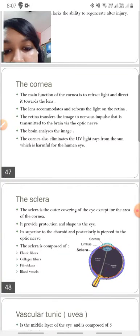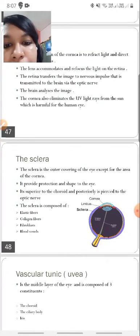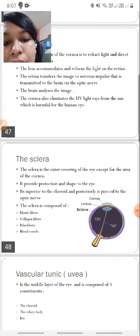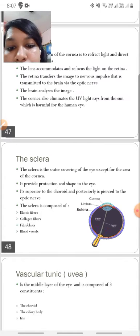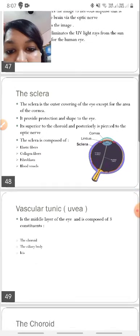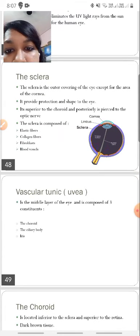So the next is the sclera. The sclera is the outer covering of the eye except in the area of the cornea. It provides a very strong structure to the eye and helps in protection and maintaining the shape of the eye. It lies above the choroid and posteriorly is pierced by the optic nerve. The sclera is mainly composed of elastic fibers, collagen fibers, fibroblasts, and blood vessels.